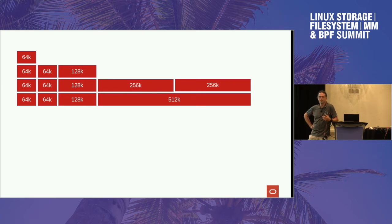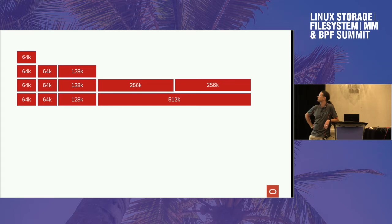I'm compiling a little list. I've started a wiki page on kernel newbies for page cache problems, just so nobody gets too complacent saying the page cache is awesome — because it is awesome in some ways, and in other ways it's terrible.